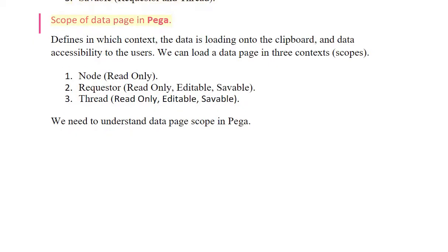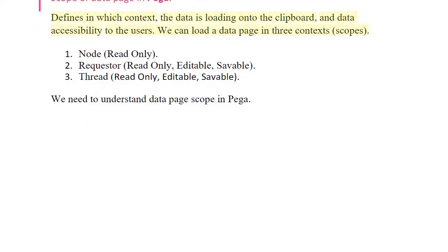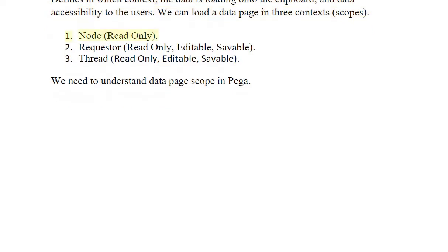Scope of a data page in PEGA defines in which context the data is loading onto the clipboard and data accessibility to the users. We can load a data page in three scopes: one — node (read only); two — requester; three — thread.